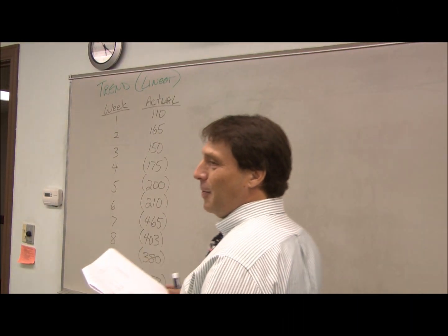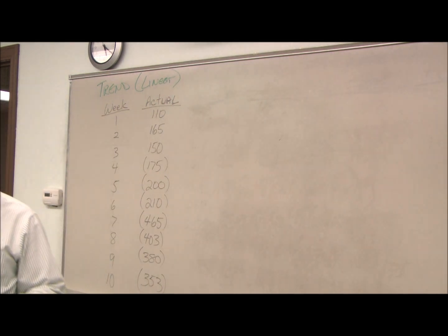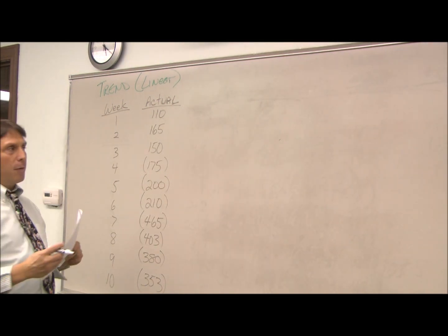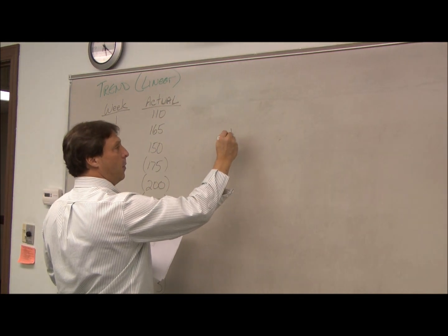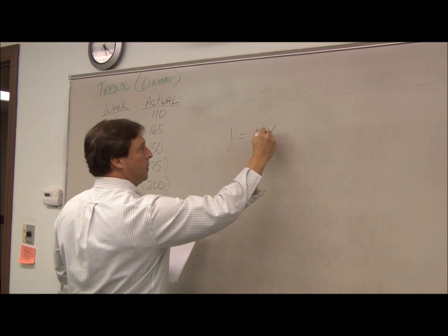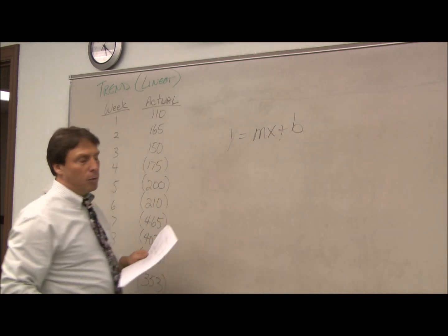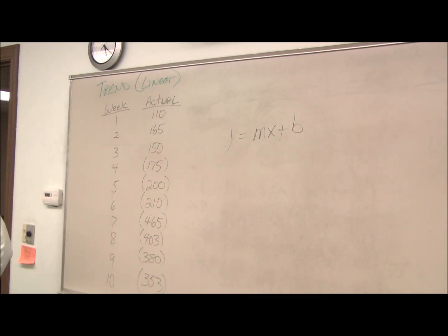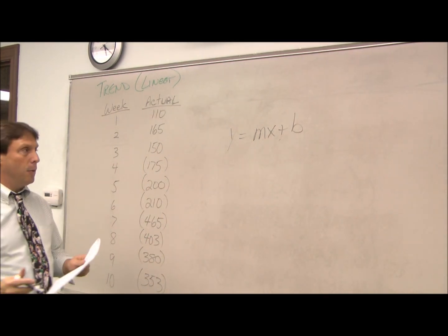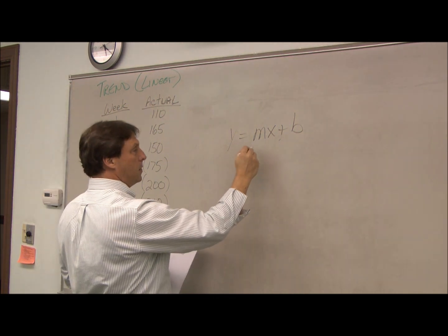All right, now we're going to do trend equations for the forecast. I'm going to differ from the book in that I'm just going to use the typical trend line that you learned in Algebra 1 back in high school, where m is your slope.